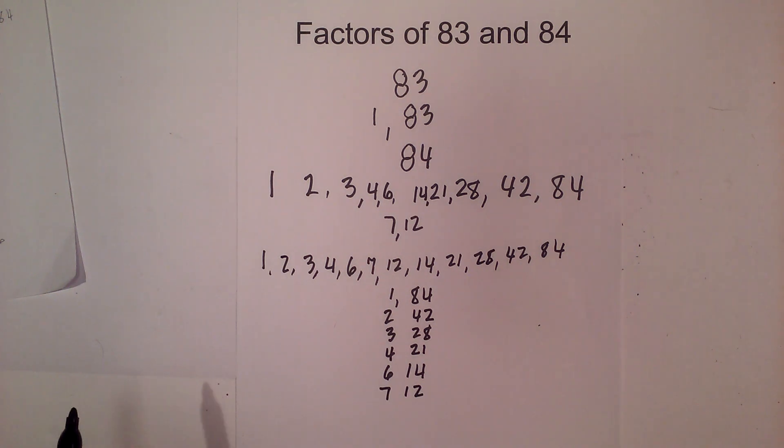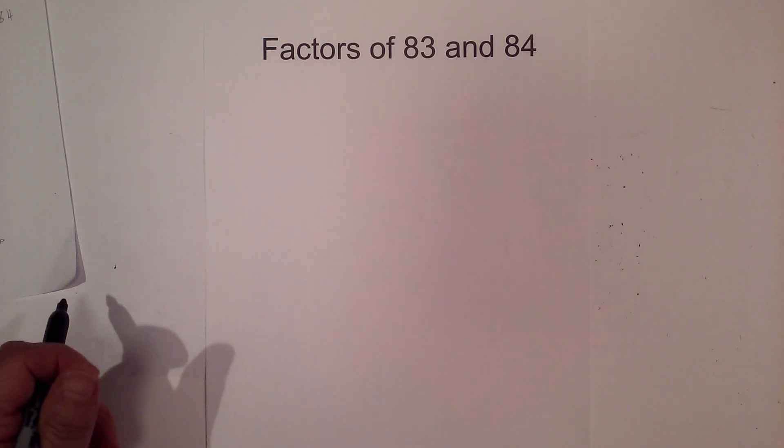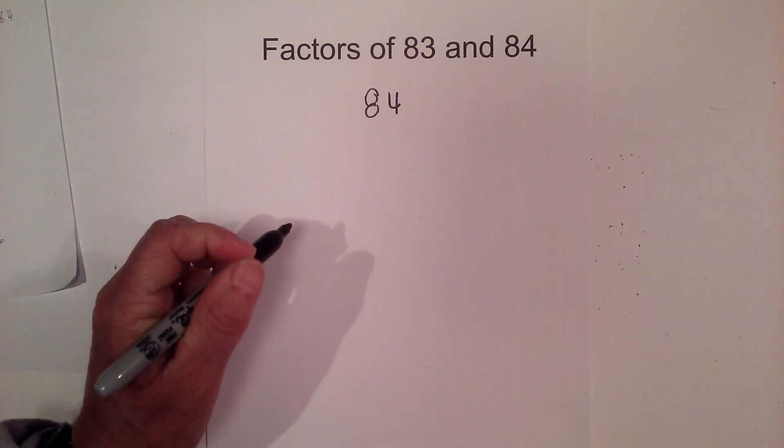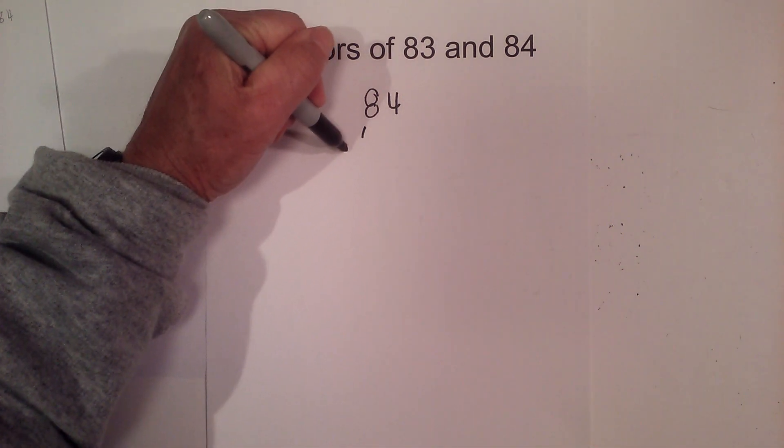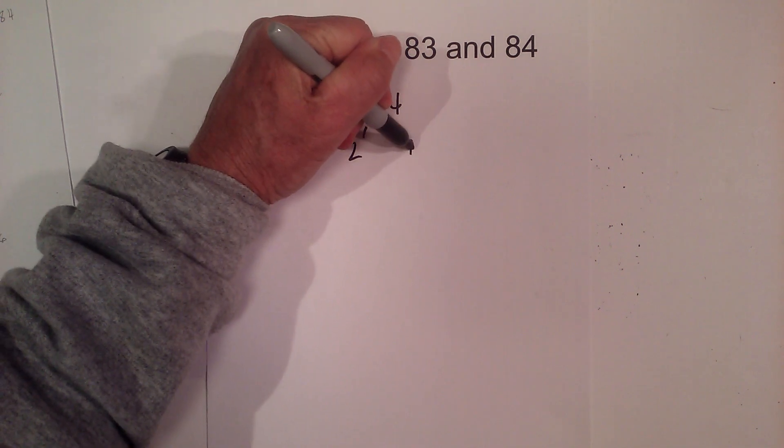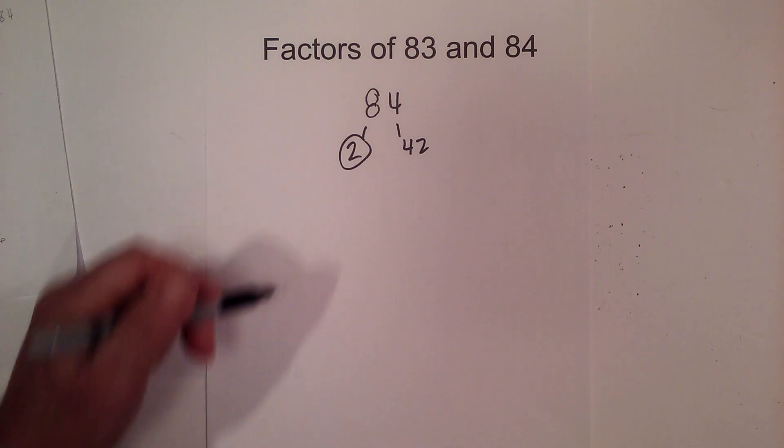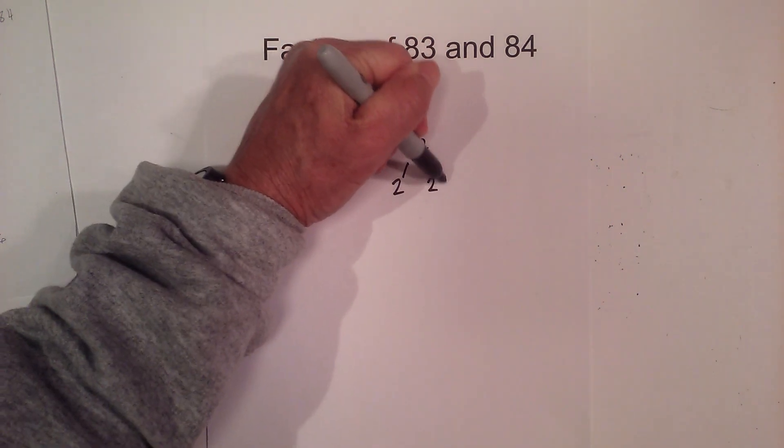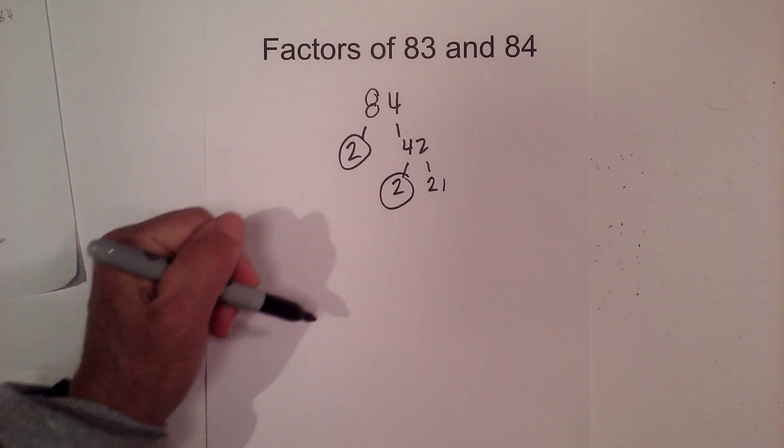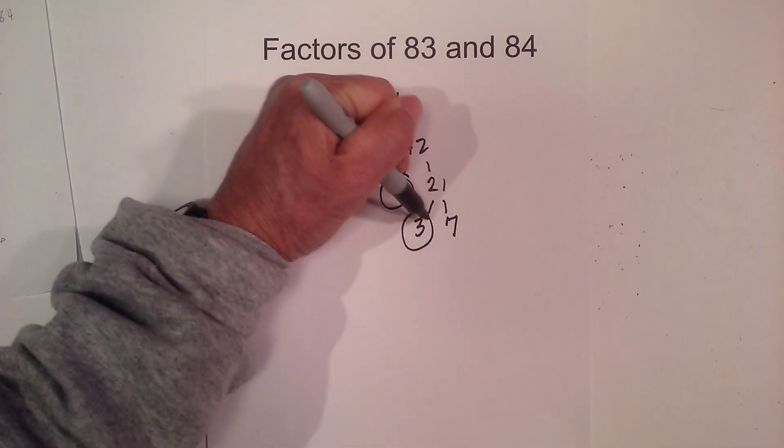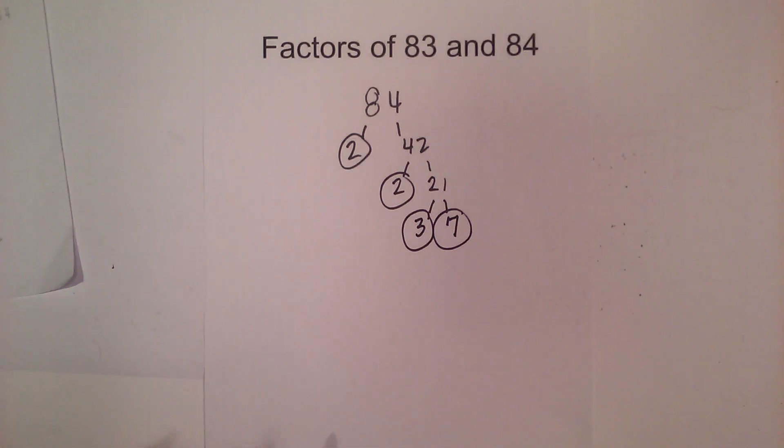Now let's complete some prime factorization. Okay, now for prime factorization we have 84. And why don't we go ahead and start with 2 times 42 equals 84. Circle the 2 because it is prime. And now 2 times 21. Circle the 2 because it is prime. And 3 times 7. Circle the 2 because they are prime.